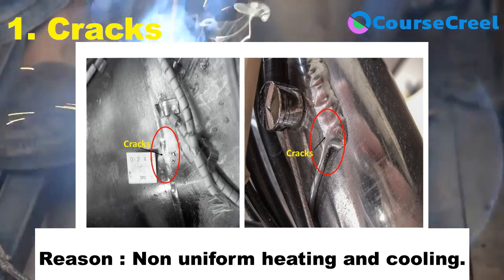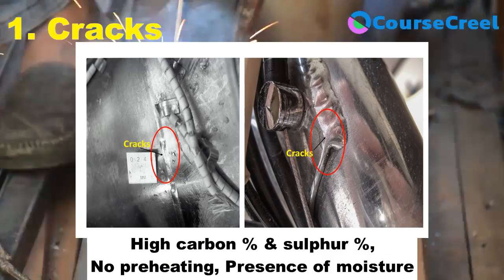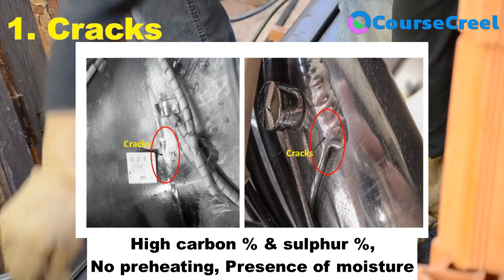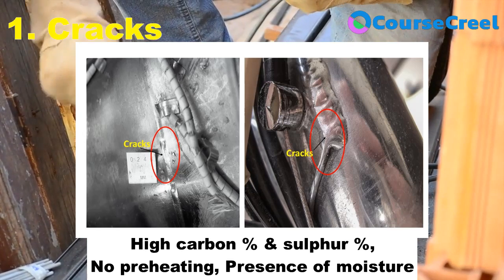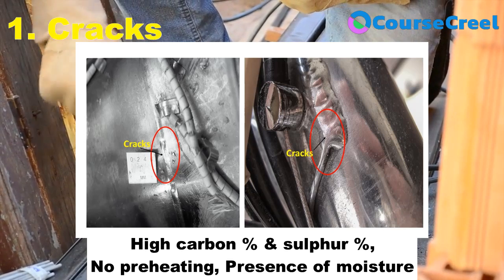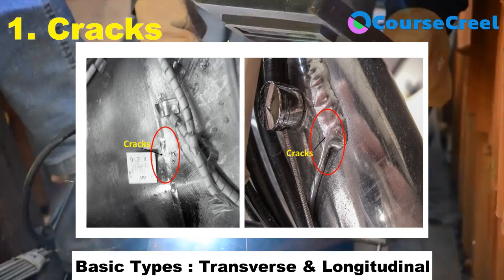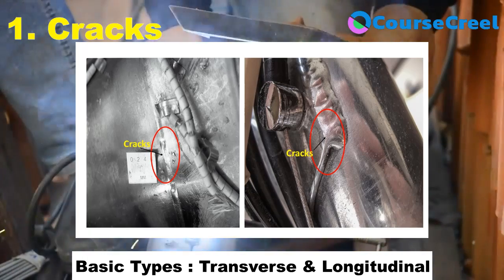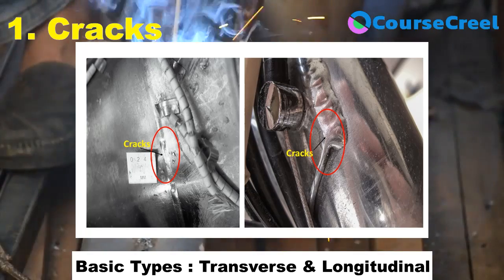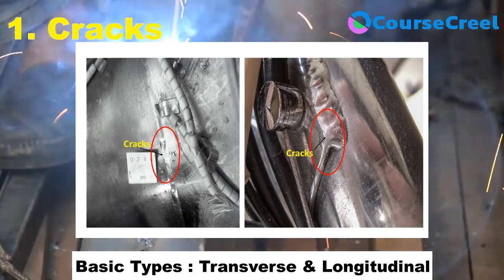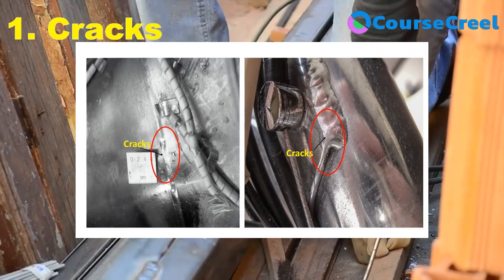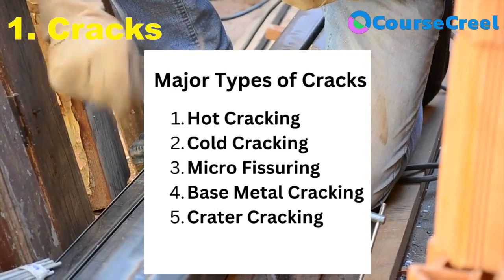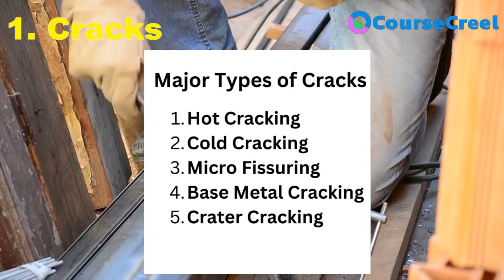These stresses mainly develop because of non-uniform heating and non-uniform cooling during welding. The main reasons for crack development are high percentage of carbon, high percentage of sulfur, absence of proper preheating, and presence of moisture. Cracks can be transverse — perpendicular to the length — or longitudinal — along the length. Major types of cracks include hot cracking, cold cracking, micro fissuring, base metal cracking, and crater cracking.